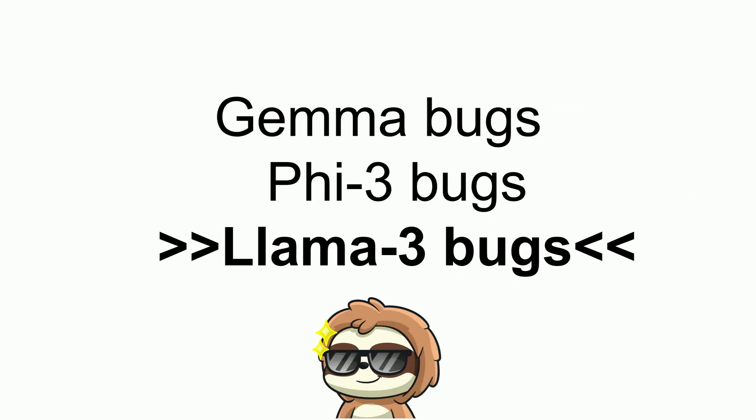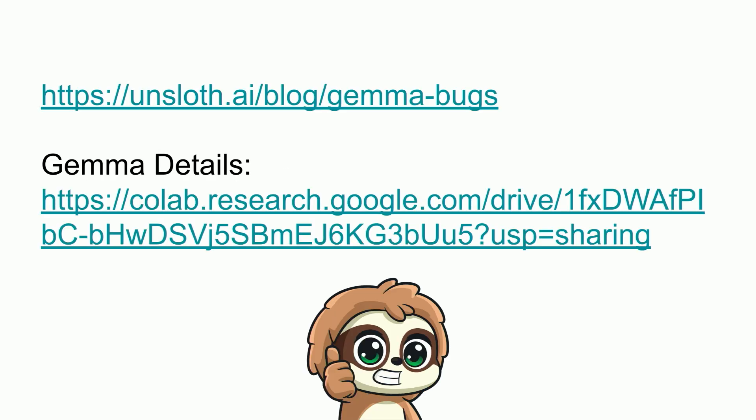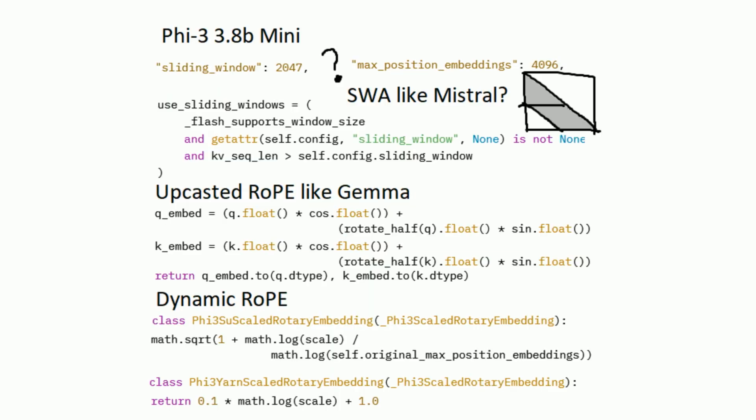Today I'm just going to be talking about Llama 3 bugs. Yesterday I talked about Gemma and Phi-3, and today we're sharing all the stuff that we found with Llama 3. For Gemma, you can access all the bug fixes in our blog post, and we have a Colab notebook for all of the Gemma bug fixes. For Phi-3, I've pasted some slides again if you want to review in your own time.